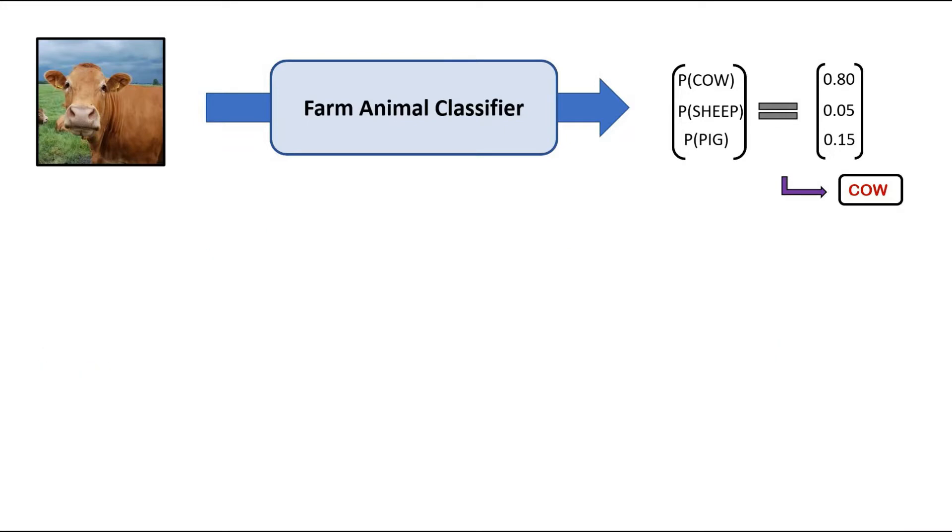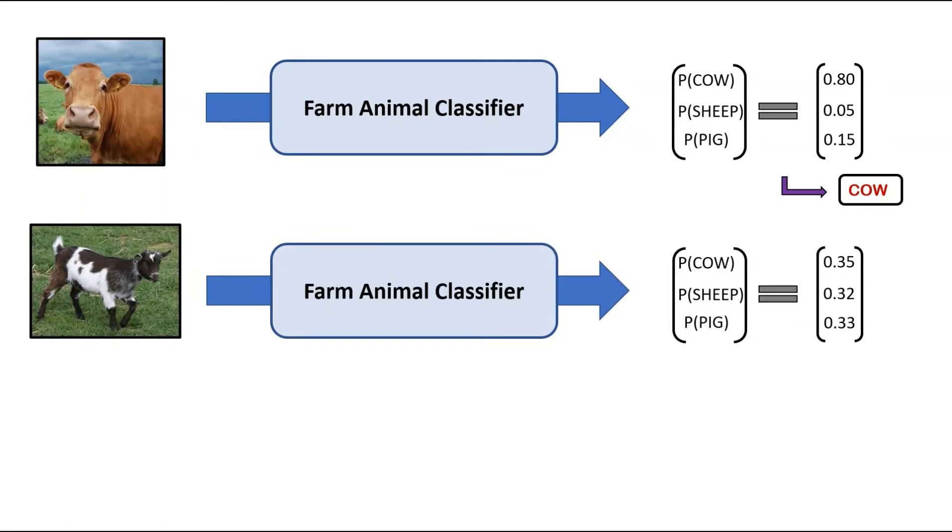Let's consider we have another image for which it is quite unclear what farm animal is being portrayed in the image. So when the image is passed through the farm animal classifier, we get this probability distribution: a probability of 0.35 for cow, 0.32 for sheep, and 0.33 for pig.